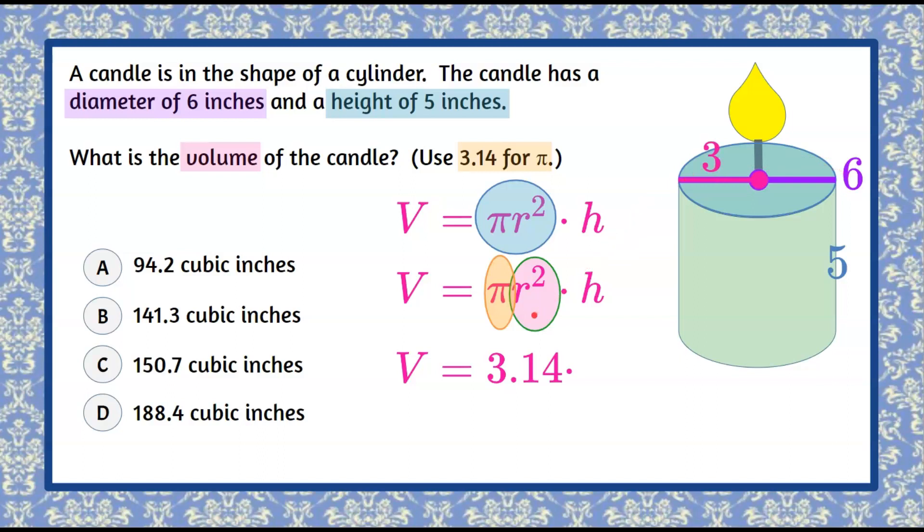Radius squared, r times r, 3 times 3 is 9. And then we need to multiply by our height which was given as 5. So we're going to multiply by 5.